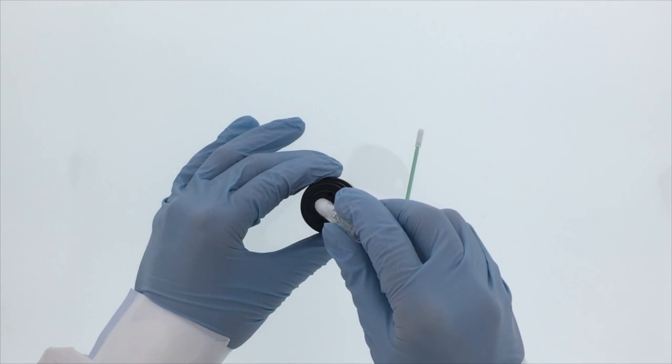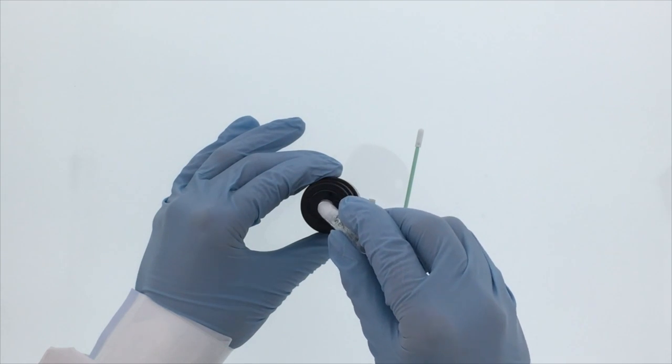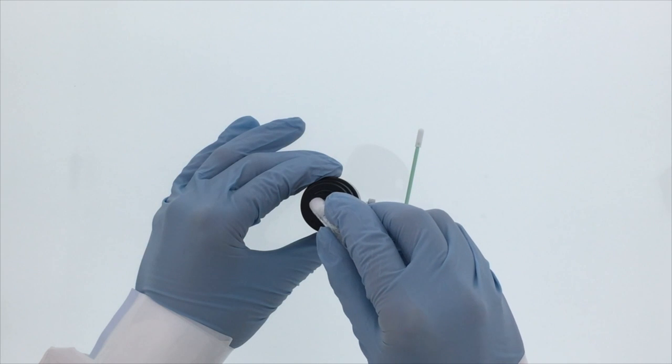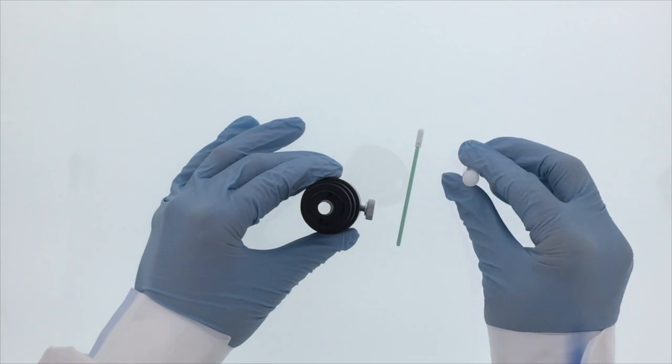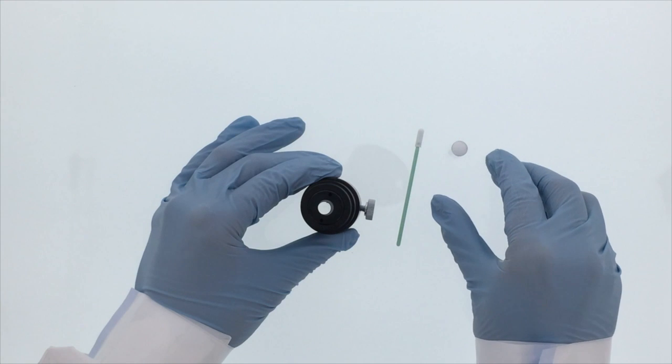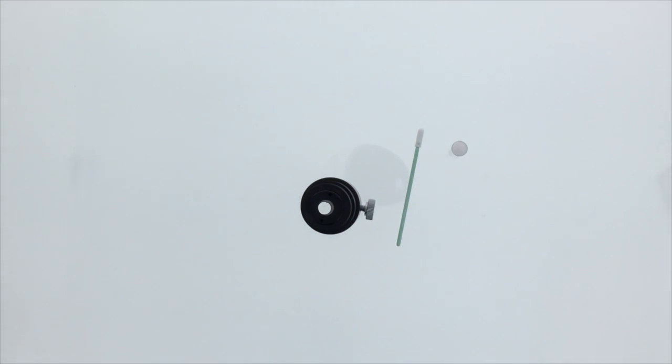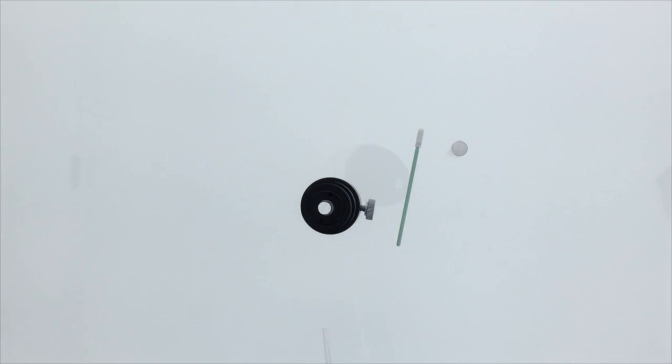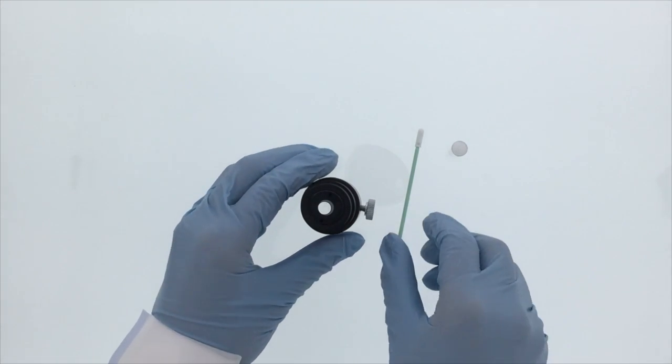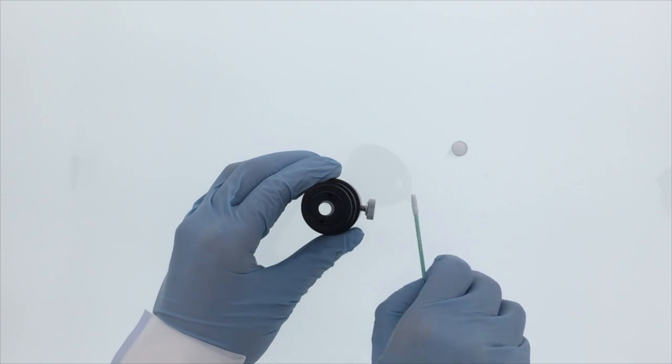Once again, take note of how the swab is being used in a circular motion to move the debris to the outer edges so that it can be removed. Then gently apply canned air. This is not a necessary step but it does help. Dusting a component prior to applying alcohol is always a good protocol.